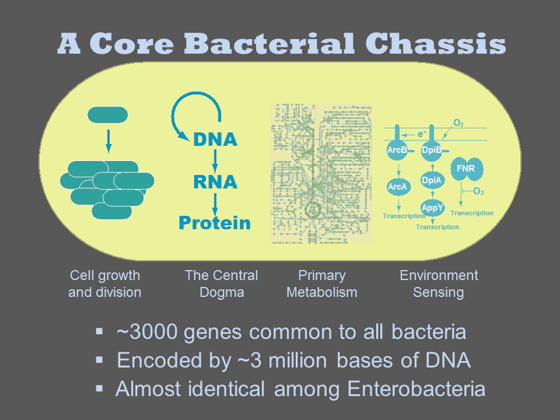Every bacterium has some essential processes, and most encode 3 megabases of this information. Some bacteria will be dependent on another organism to supply primary metabolism, and the amount of environmental sensing is variable, but there are some things the cell just needs to have to be a cell. When we deal with pathogenesis, there are always additional genes involved. These core processes alone are not sufficient for this behavior. The added genes associated with commensal or pathogenic behavior are collectively referred to as virulence factors.